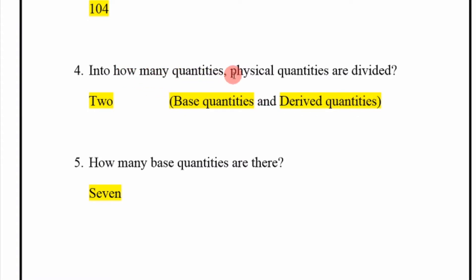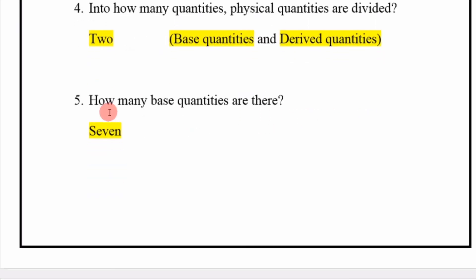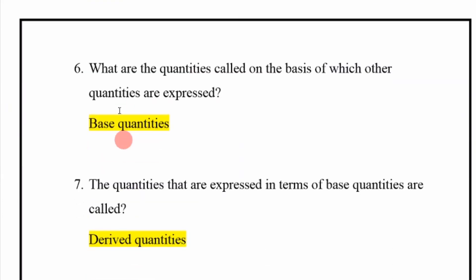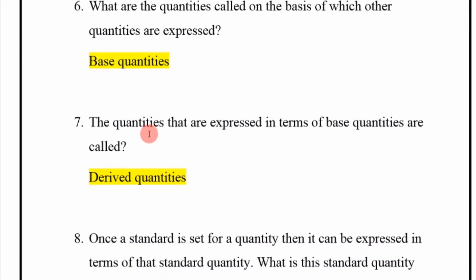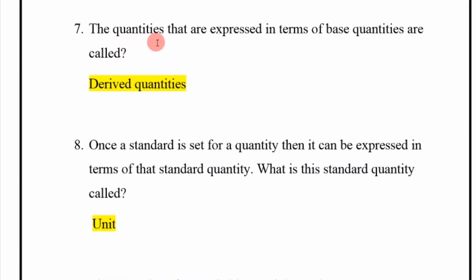How many base quantities are there? Seven. What are the quantities called on the basis of which other quantities are expressed? Base quantities. The quantities that are expressed in terms of base quantities are called derived quantities.